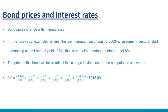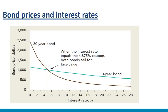We will also examine the relationship between interest rates and fixed income security prices. Bond prices change with interest rates. In the previous example where the semi-annual yield was 0.6 percent, assume investors start demanding a semi-annual yield of 4 percent — an annual quoted rate of 8 percent. The price of this bond will fall: PV = 24.375/1.04 + 24.375/1.04² + ... + 1024.375/1.04⁶ = $918.09. With rising interest rates, prices fall; with falling interest rates, prices rise.